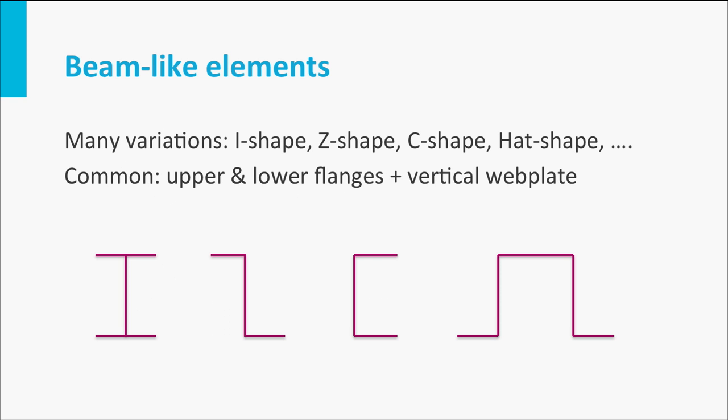The I-beam is just one example of beam-like elements. In aircraft structures you may discover many of these elements. Other examples are Z-beams or Z-profiles, C-beams, and hat stiffeners.